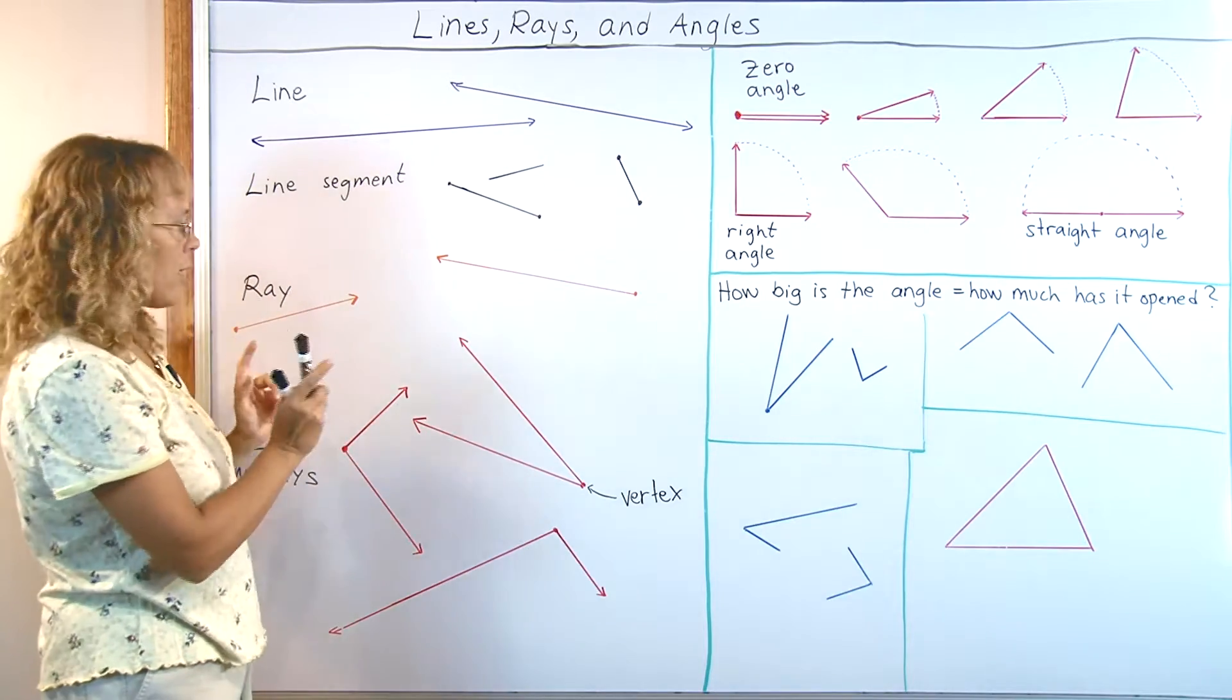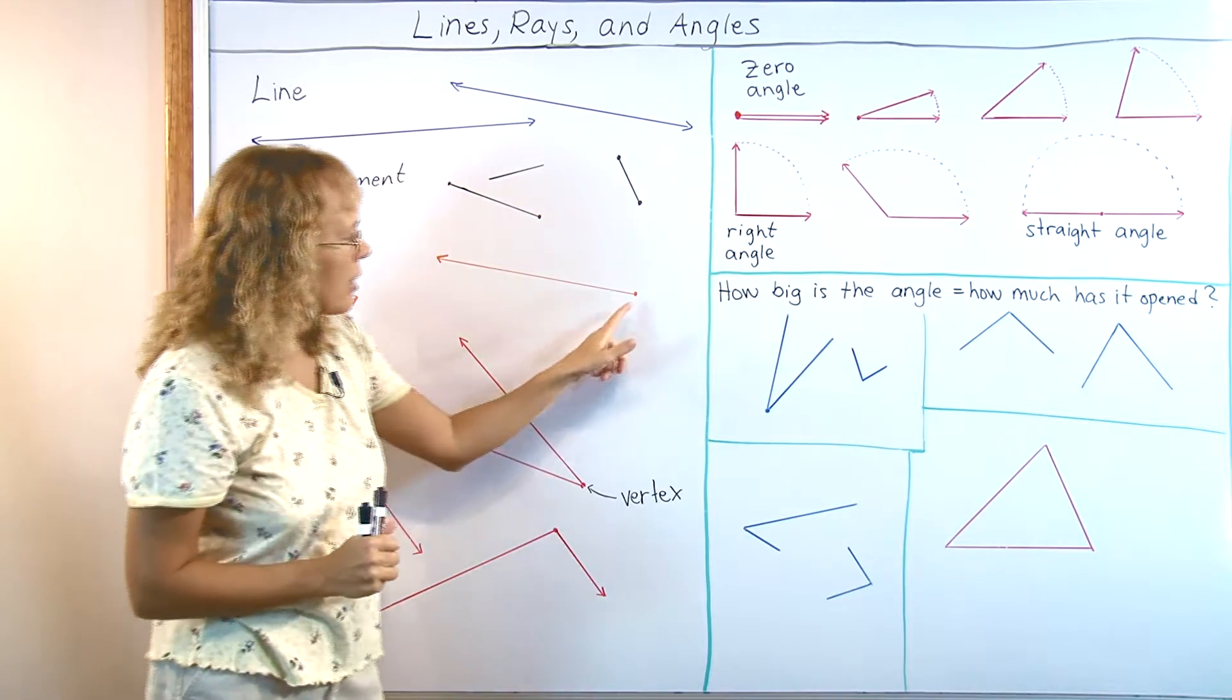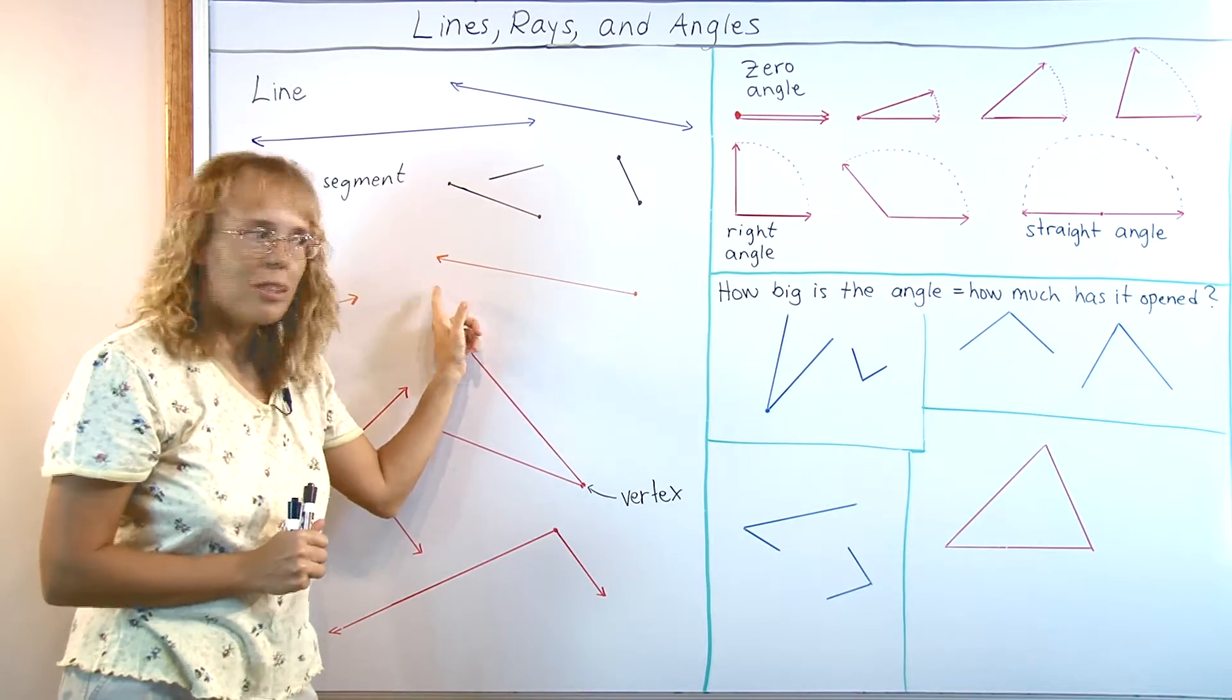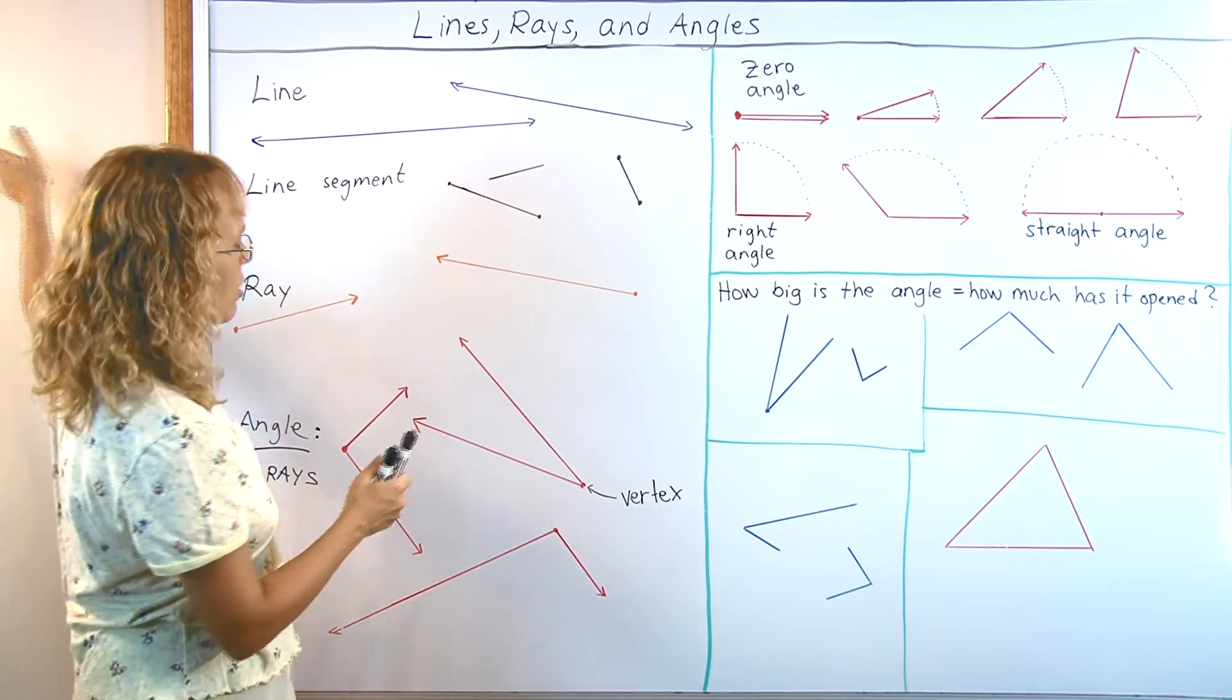And then an important concept for angle is the concept of a ray. A ray has a starting point but no ending point. So it starts somewhere and then goes indefinitely into this direction over there.